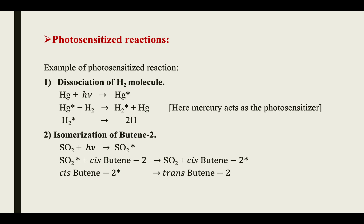Another example is the isomerization of cis-butene-2. For this reaction, a molecular sensitizer — sulfur dioxide SO₂ — is used. SO₂ absorbs hν and goes to the excited state SO₂*. This SO₂* reacts with cis-butene-2; the SO₂ returns to ground state while cis-butene-2 goes to the excited state, and this excited state undergoes isomerization to convert to trans-butene-2. This is the application of a photosensitized reaction.